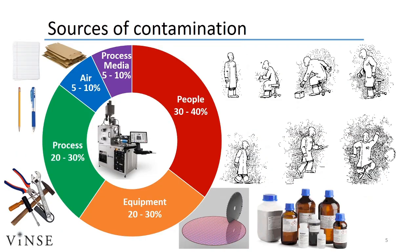The main source of contamination is by far the people in the space. The more active a user, the more debris they generate. For both cleanliness and safety concerns, users should work carefully and mindfully in the space. Running is not permitted in the clean room. Other sources of contamination come from the tools, media, and processes used in the clean room. For instance, just like a wood saw, the wafer-dicing saw will generate dust as it cuts through substrates. As such, it is kept in the chase to promote clean process bays.